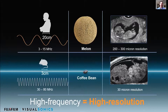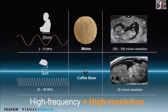Typical ultrasound operates in the 3 to 15 megahertz frequency range. We are operating in the 30 to 80 megahertz frequency range. The two images on the right show one is a human fetus and the other is a mouse fetus. We're going right down to about 30 micron resolution with our highest frequency transducers.